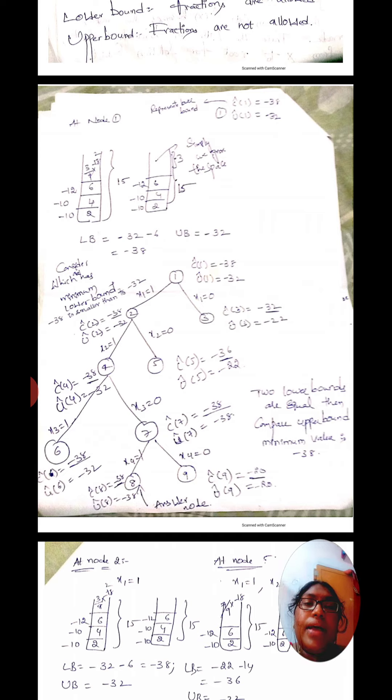Now we have to calculate lower bound and upper bound for each and every node. For the lower bound, fractions are allowed. For the upper bound, fractions are not allowed. First, at node 1, we draw a diagrammatic representation step by step.